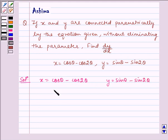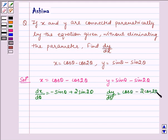Now let us find the derivatives of x and y with respect to theta. dx/dθ = -sin θ + 2 sin 2θ and dy/dθ = cos θ - 2 cos 2θ.